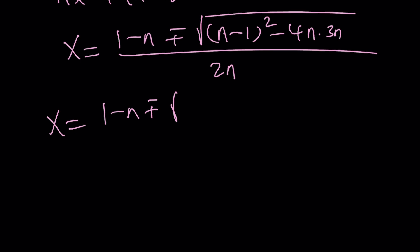This will give us n squared minus 12 n squared. That'll be negative 11 n squared, minus 2 n plus 1 under the radical. Uh-oh. This is quite complicated, isn't it?